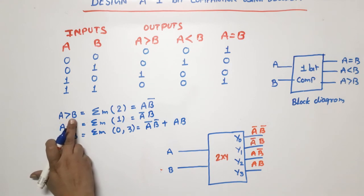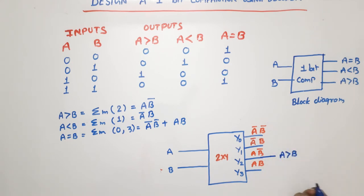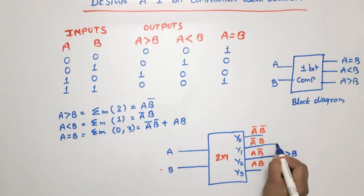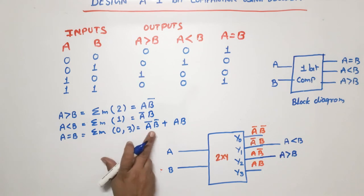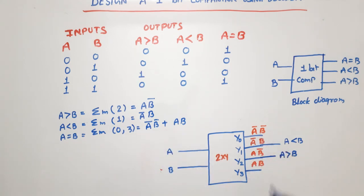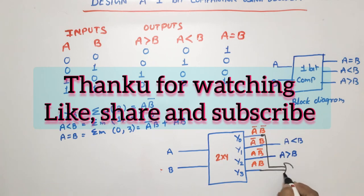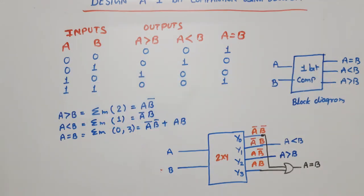Now mapping to our comparator outputs: A greater than B comes from Y2 (A·B-bar). A less than B comes from Y1 (A-bar·B). A equal to B comes from Y0 and Y3 combined (A-bar·B-bar + A·B). This completes the one-bit comparator using a 2-to-4 decoder. If you have any doubts, please write in the comment section. Thank you.